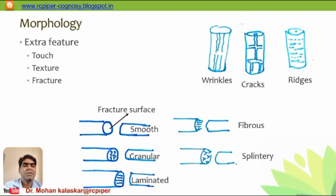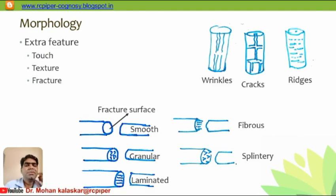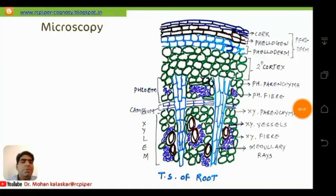Fractures are classified into five types. When the fractured surface is very plain, it is called a smooth fracture. When it has a grain-like structure — for example, like the surface of broken chalk — it is called a granular fracture. A laminated fracture shows distinct layers of substance. A fibrous fracture shows fibrous material emerging from the broken surface. A splintery fracture is similar to granular but the grains are pointed.